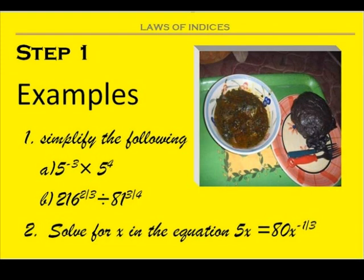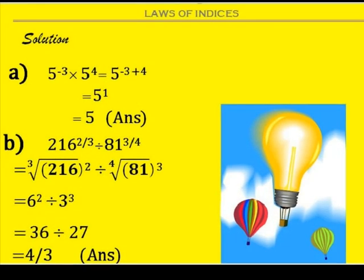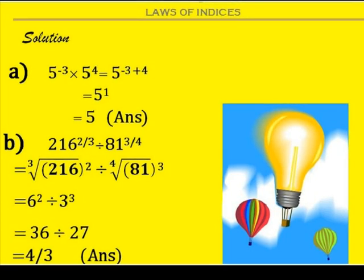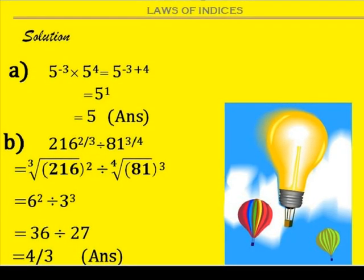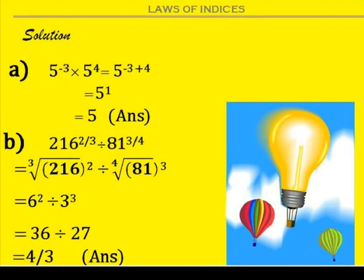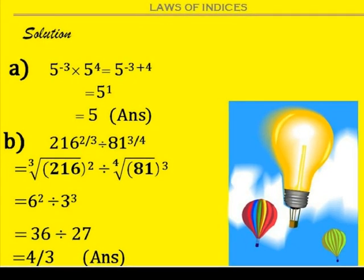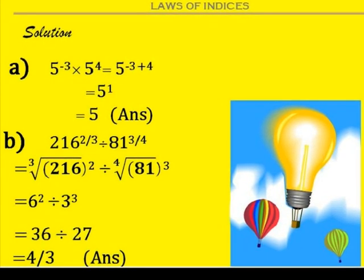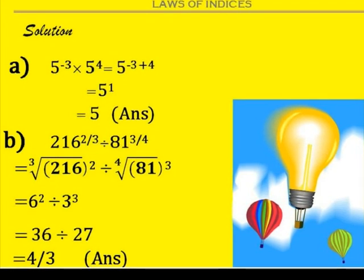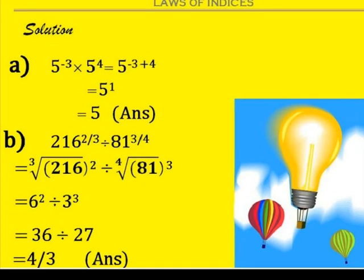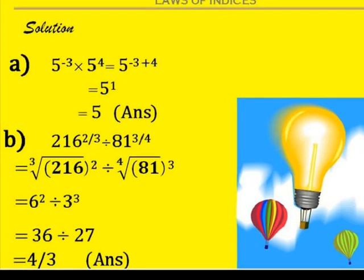Take time to follow the solution in the next slide. Example 1: the first law states that x raised to the power a, times x raised to the power b, equals x raised to the power a plus b. That is why the powers minus 3 and plus 4 are added together. When minus 3 is added to plus 4, the answer is 1, giving 5 raised to the power 1, which equals 5.